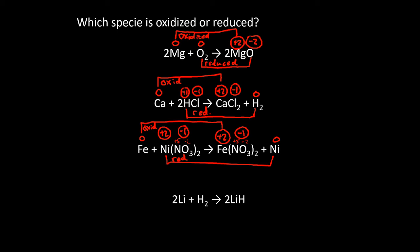For the last one, go ahead and pause the video and give it a shot — this is going to be a little different than what we've seen before, but if you follow the rules you will get the correct answer. Hopefully you found that lithium is zero and hydrogen is zero. You might have made the mistake of saying lithium is plus one because it's in group one, but rule four does not say all group one metals have an oxidation number of plus one — it says group one metals in their compounds. This is not in a compound; it's just lithium, so it's zero. Same thing with H2.